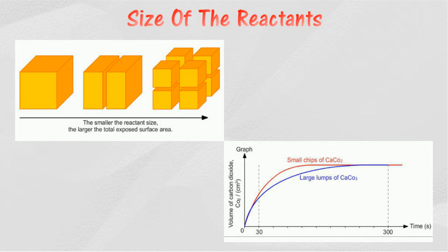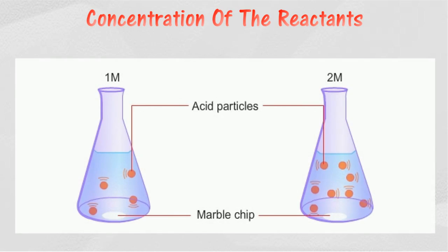The size of the reactants will affect the rate of reaction for reactants that are in solid form. The smaller the reactant size, the larger the total exposed surface area, therefore the rate of reaction will be higher.